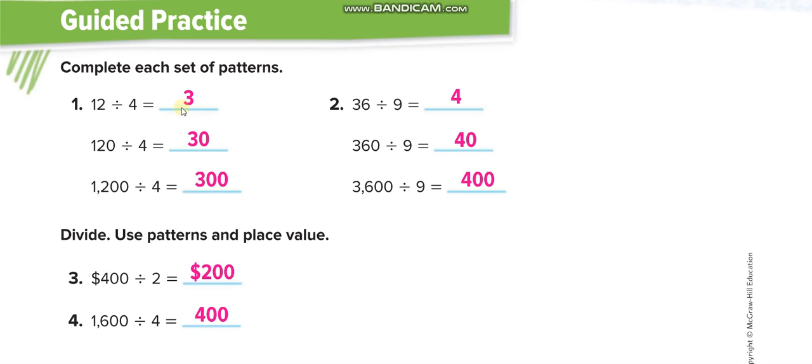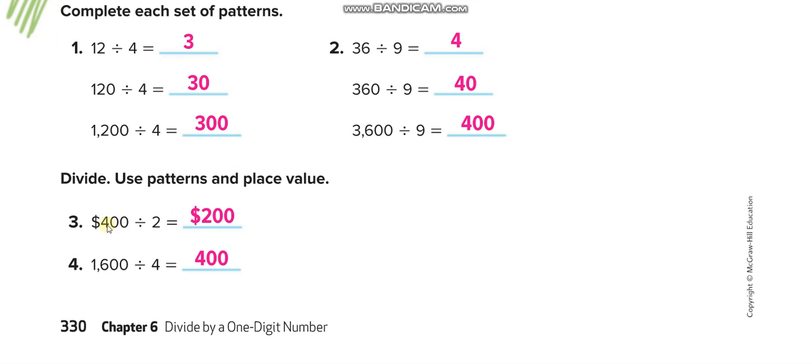12 divided by 4 is 3 with 1 zero, with 2 zeros. 36 divided by 9 is 4, 1 zero is 40, 2 zeros is 400. 400 divided by 2 is $200. 1600 divided by 4, with 2 zeros. First, you remove the zeros, 16 divided by 4 is 4, and you put 2 zeros back in your answer.